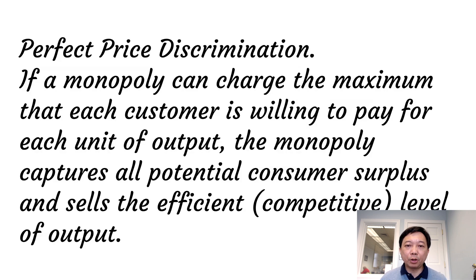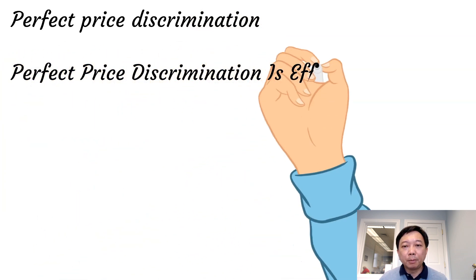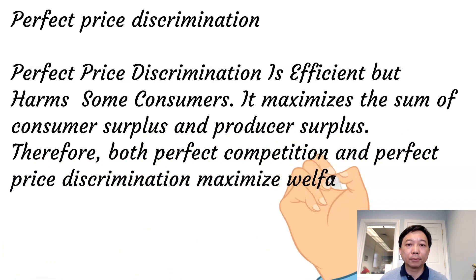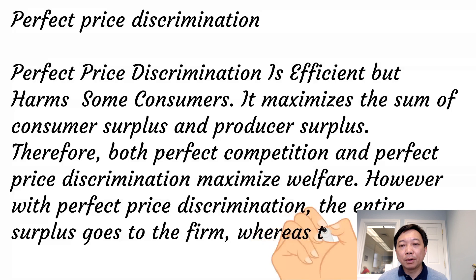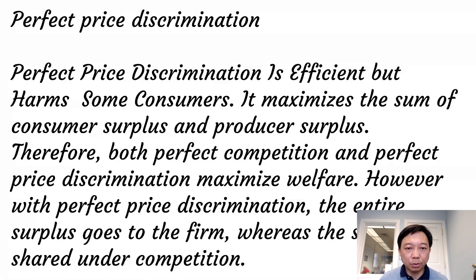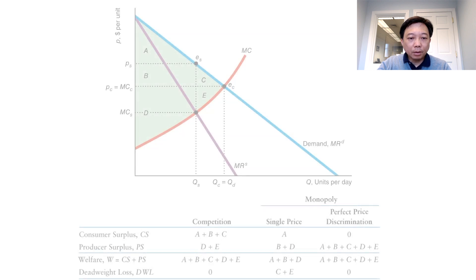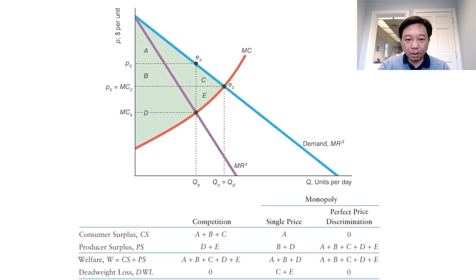Perfect price discrimination is efficient — it maximizes the sum of consumer surplus and producer surplus. Therefore, both perfect competition and perfect price discrimination maximize welfare. However, with perfect price discrimination, the entire surplus goes to the firm, whereas the surplus is shared under competition. We can derive the consumer surplus, producer surplus, and deadweight loss under perfect competition, monopoly uniform pricing, and perfect price discrimination.